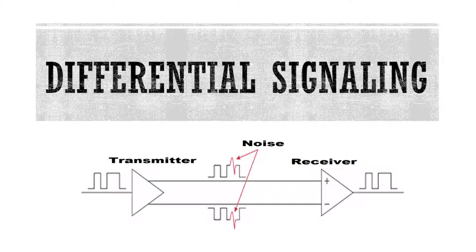Welcome back to our channel. In this video we are going to discuss differential signaling. In differential signaling, a signal is transmitted from transmitter to receiver using two lines instead of a single line as in single-ended signaling. On both lines, two complementary signals travel — for example, if one line carries a '1', the other carries an inverted signal, which is '0'. This video will explain why we require differential signaling and why single-ended signaling does not serve our purpose.